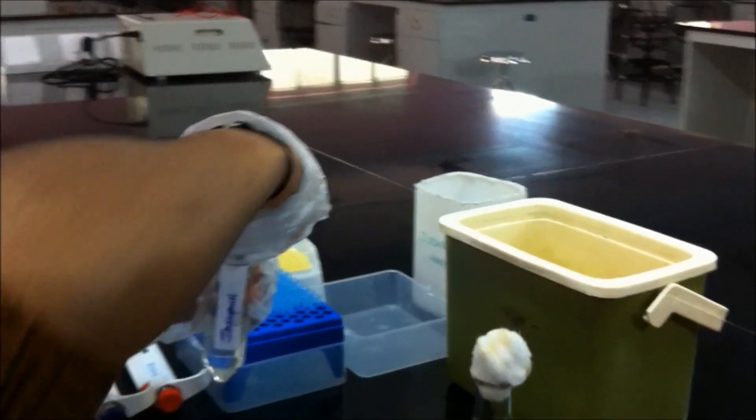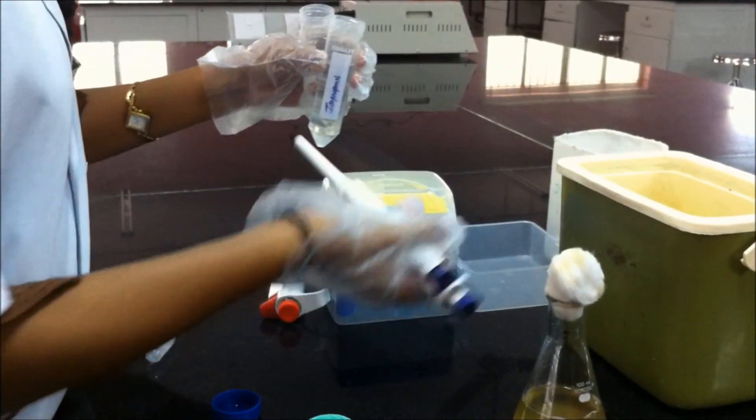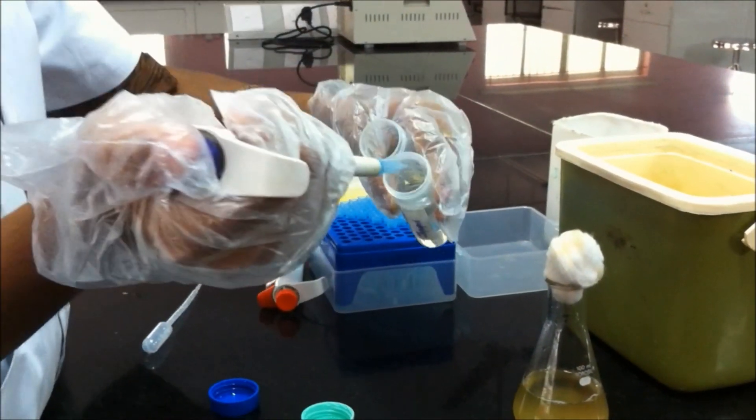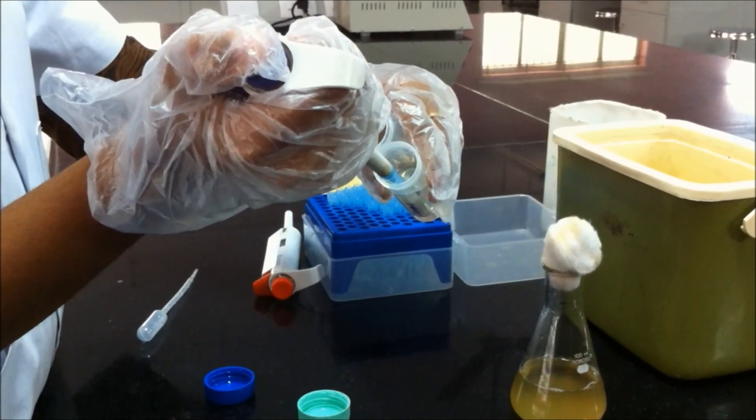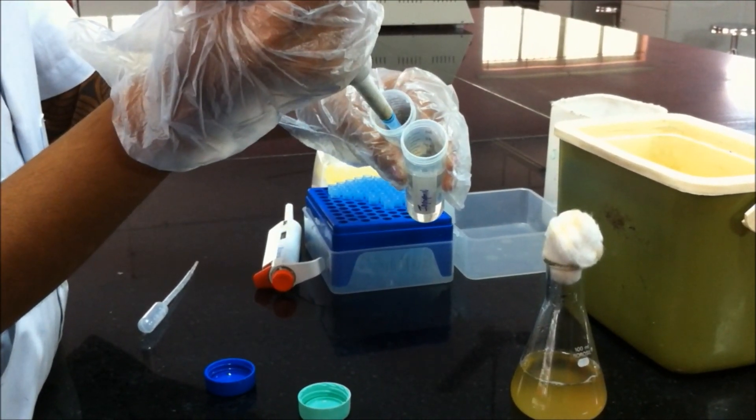Add 300 µL of ice cold isopropanol to the tube and mix it well. Leave the tube in deep freeze for about 10 minutes. DNA and RNA are precipitated in this step.